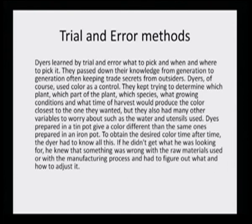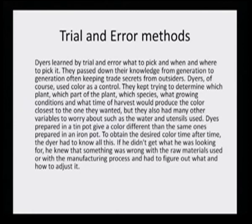Dyes prepared in a tin pot gave a color different from those prepared in an iron pot. To obtain the desired color, the dyer had to know all these variables. If he did not get what he was looking for, he knew something was wrong with the raw materials or the manufacturing process and had to figure out what and how to adjust it. Plants also go through their biosynthetic pathway — dyes are not synthesized just in a day; they have their own gradual biosynthetic process. If harvesting is done at the initial stages of the biosynthetic pathway, the dye content will obviously be very low.